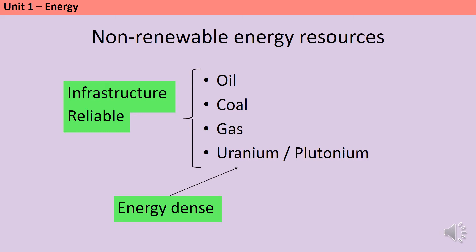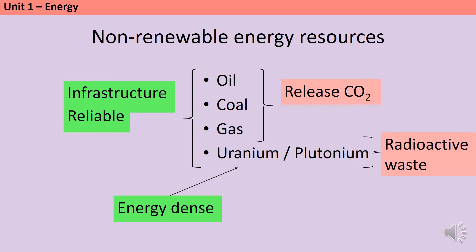In terms of disadvantages, the biggest one is that these sources are non-renewable — they're going to run out, and they're doing so quite rapidly. We must also consider environmental impacts: oil, coal, and gas release carbon dioxide when burned, which is a greenhouse gas contributing to global warming. Nuclear fuel produces no carbon dioxide emissions, but we do need to worry about radioactive waste, which must be disposed of very carefully.